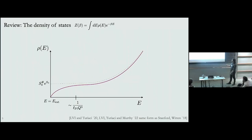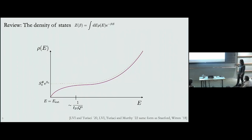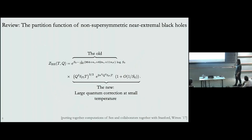For instance, you could look at the density of states by Laplace transforming the partition function, and you find that compared to the semi-classical answer — even including the previous one-loop expansion plotted in dotted red — the actual density of states with full quantum corrections deviates a lot from the semi-classical density of states when the energies above extremality hit the scale that appears as the Schwarzian coupling.